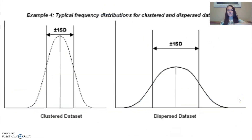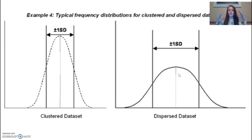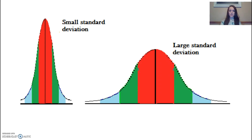Standard deviation also changes based on your data set. When you're graphing, if your data is really close to your mean, it's going to be a taller shape. If your data is more spread out, it will be a flatter shape. Standard deviation changes based on whether the data is more dispersed or closer together. Here are two examples: one bell curve where data is closer to the mean giving a tall arch, and another where data is more spread out giving a flatter hill.